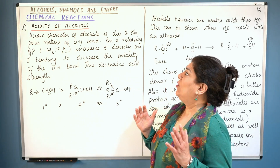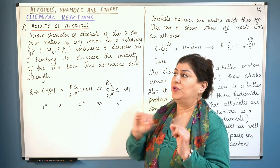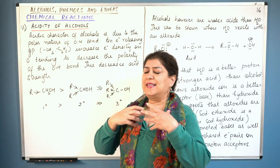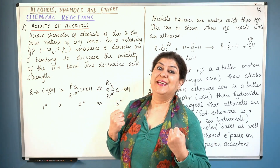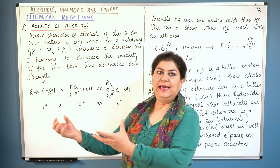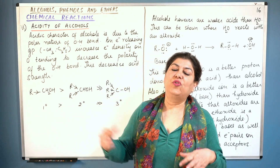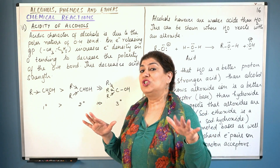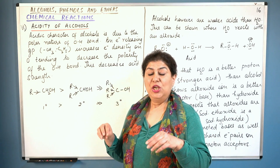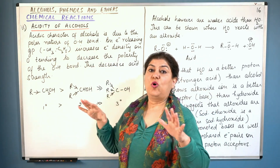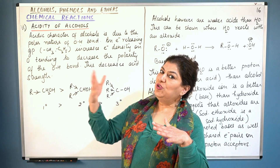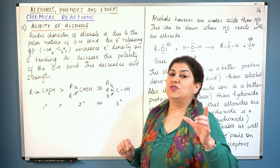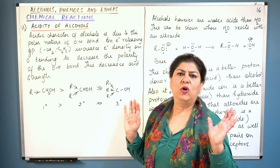The acidic character of alcohols is due to the polar nature of the OH bond. Oxygen is electron-deficient — it has six electrons in its outermost shell and needs two more to complete its octet. So it either shares or snatches electrons from an atom that would easily lose them. Hydrogen, on the other hand, is the most electropositive non-metal, so it tends to leave by leaving its electron behind as H⁺. It is this OH bond which is responsible for the acidic character of both alcohols and phenols.